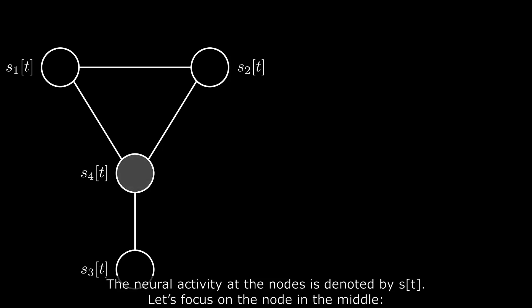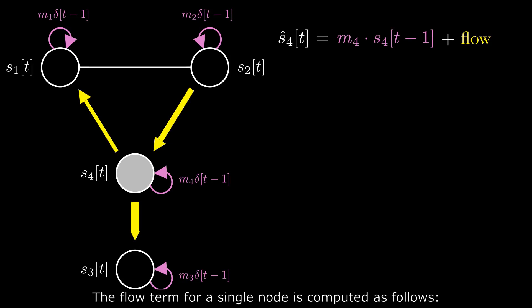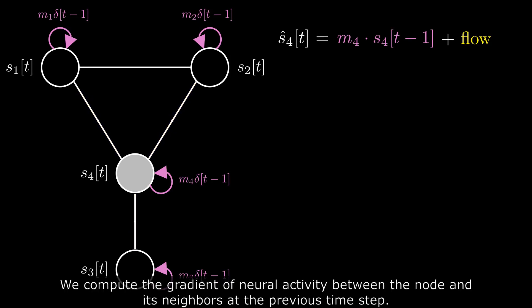Let's focus on the node in the middle. The diffusion model relates the current timestep of neural activity st to the previous timestep st-1 through a node memory and a flow term. The flow term of a single node is computed as follows. We compute the gradient of the neural activity between the nodes and its neighbor at its previous timestep.